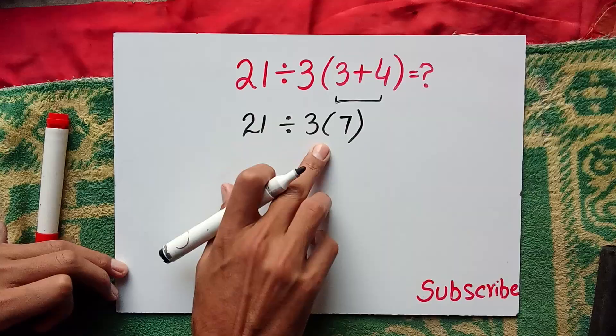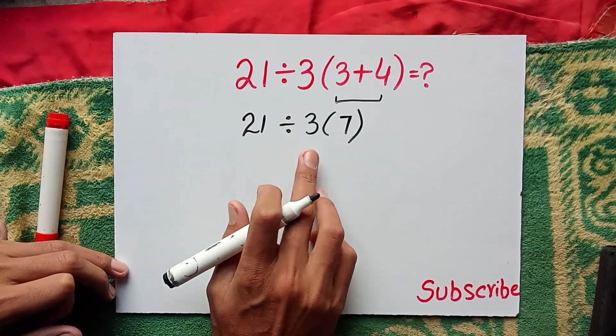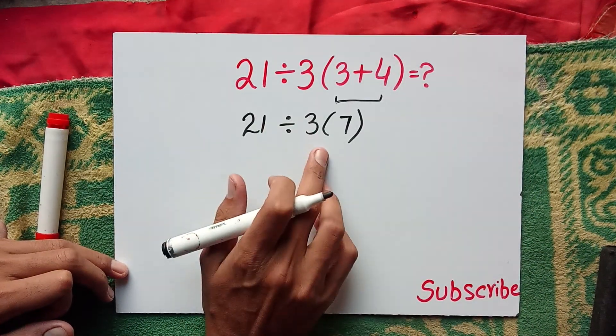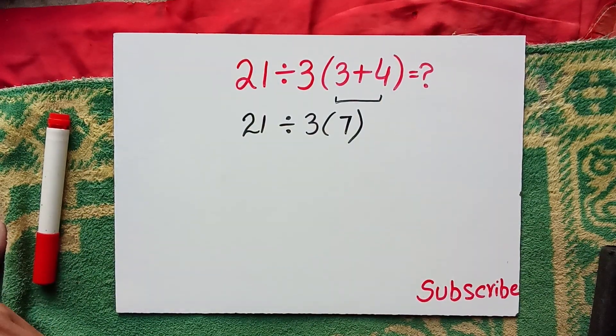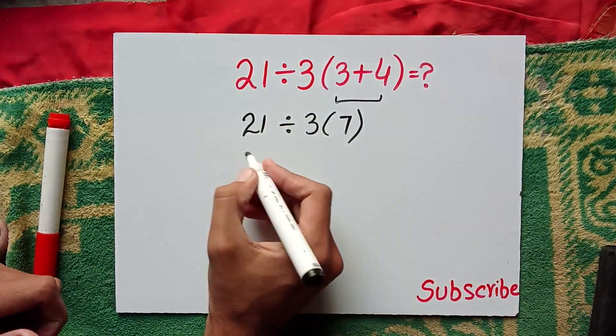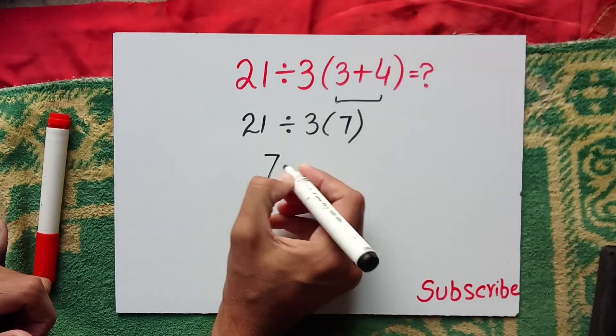Now we have one multiplication and one division. According to the rule of PEMDAS, multiplication and division have equal priority, and we solve them from left to right. So 21 divided by 3 equals 7.